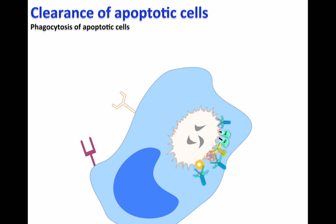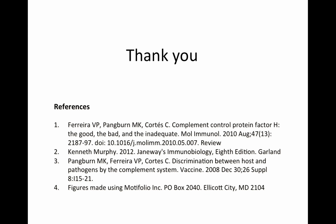In summary, the complement system plays a fundamental role in keeping the host safe from certain products that are normally produced in our body: immune complexes and apoptotic cells. Thank you.